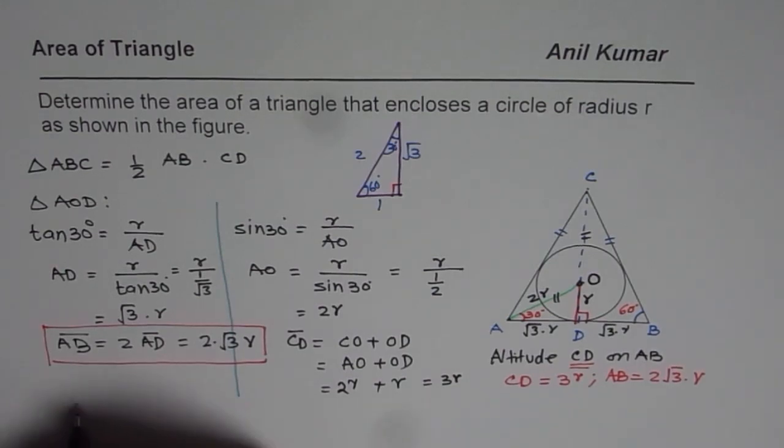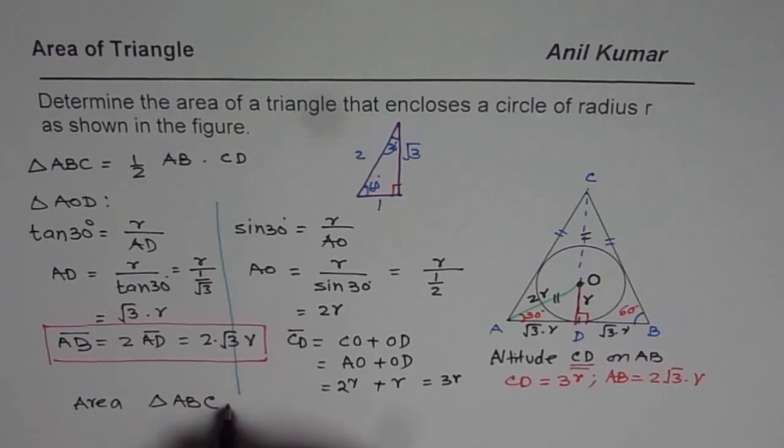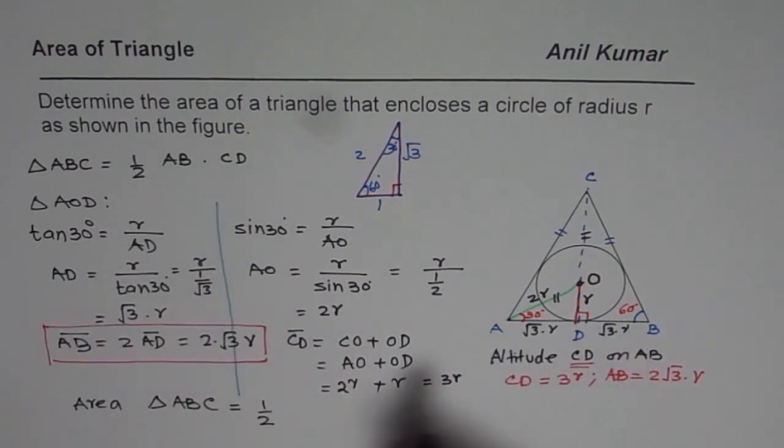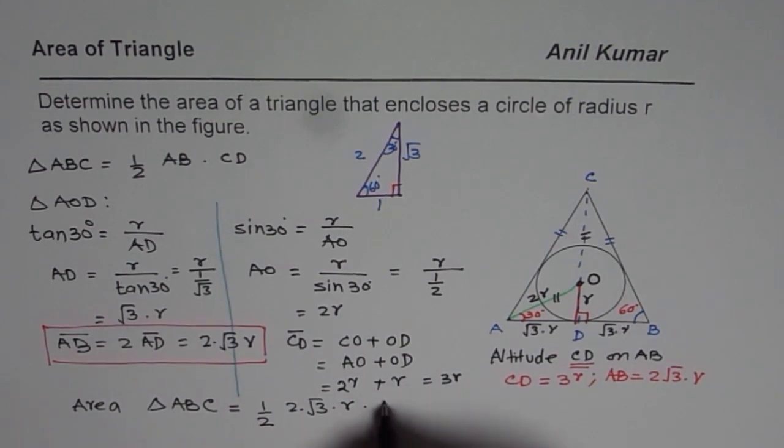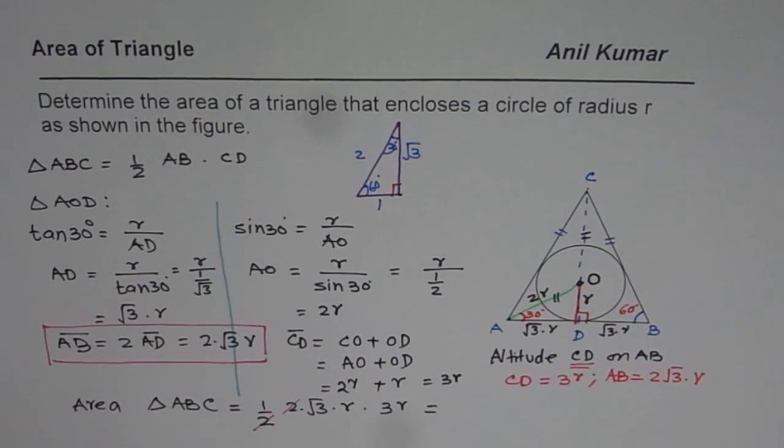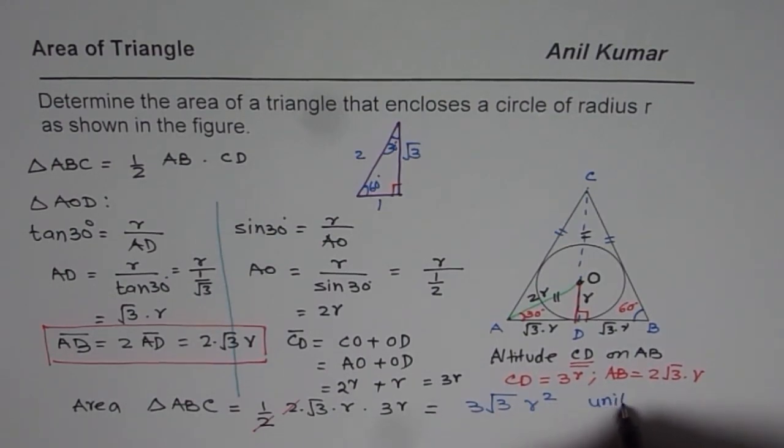Now we can find area of triangle. So area of triangle ABC is equal to half, as we wrote, AB, so AB is 2 times square root 3 times R times CD which is 3R. So you can simplify this. Let me simplify. So 2 and 2 cancel out, so we get 3 square root 3, R times R is R square.